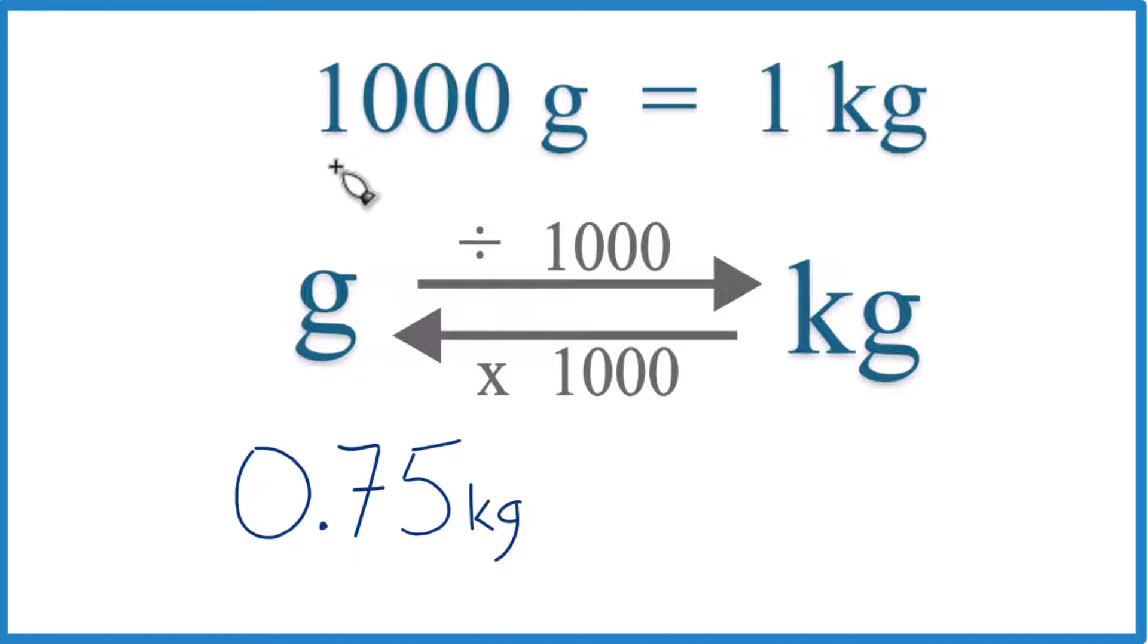So you need to remember that 1,000 grams equals 1 kilogram. This is what we call our conversion factor here. And we use it when we go from grams to kilograms or kilograms to grams.